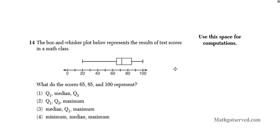Let's take a look at question 14. We have a box and whisker plot here of a test score in a math class. The question says, what does 65, 85, and 100 represent? So let's identify where those are. This right here, this is 65, and this is 85, and this point right here is 100. So what are these?